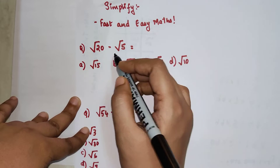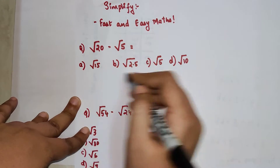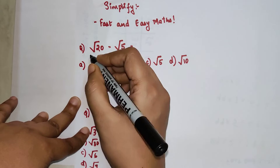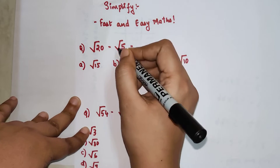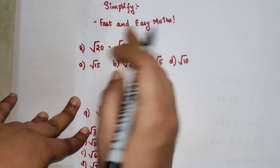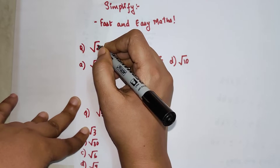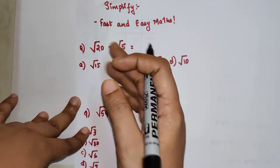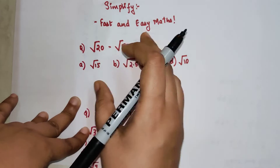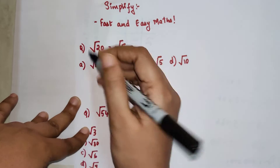We have root 20 minus root 5, and these are the options. In such a case, what you should do is look at root 5 — 5 itself is a prime number, so we cannot simplify this further. But root 20 we will try to write in terms of factors where there is a proper square.